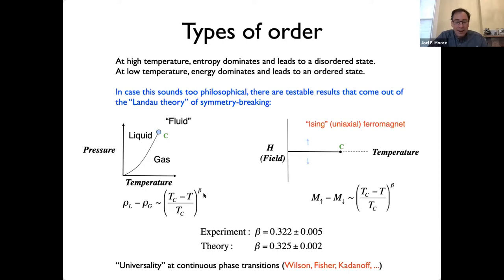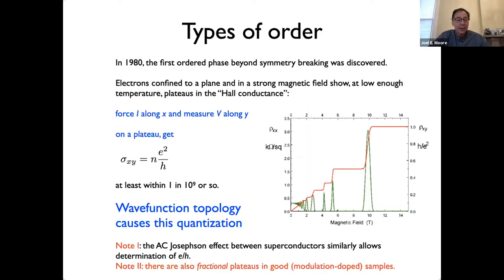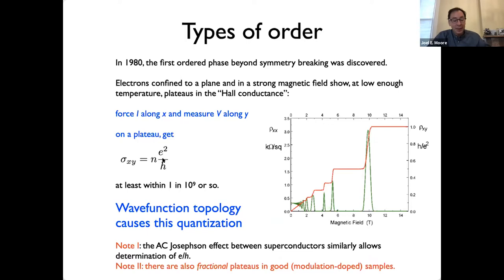One way to understand why we care about topological phases is that there is a similar kind of universality. The great example is the integer quantum Hall effect: make a 2D sample, apply a magnetic field, run a current, measure the transverse voltage, and you find the Hall conductance is quantized to incredibly high accuracy — e²/h — whether you're doing it in gallium arsenide or graphene. This universality is what led to the Berry phases of solids.